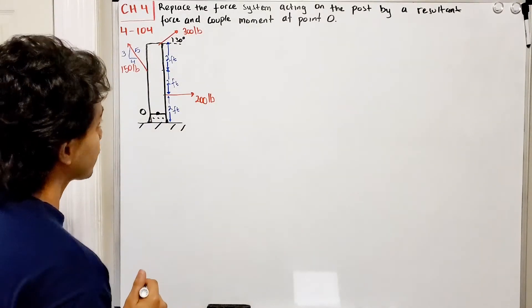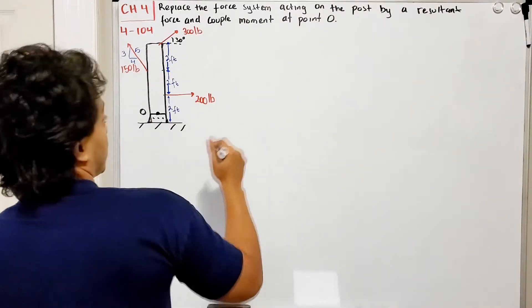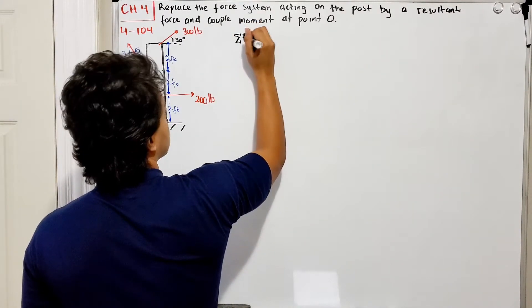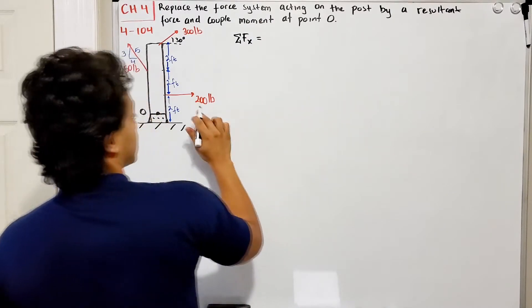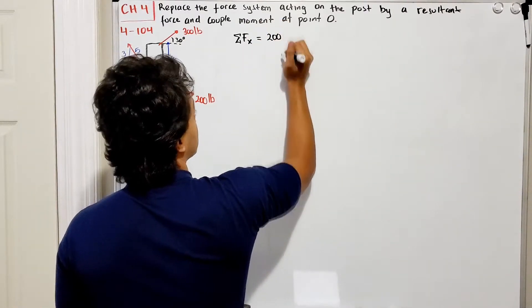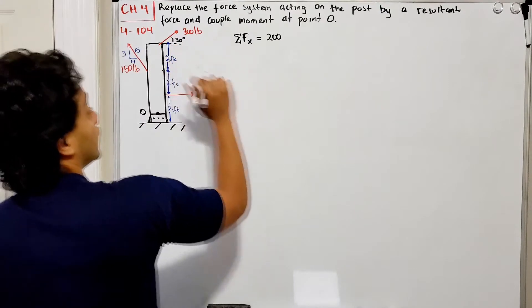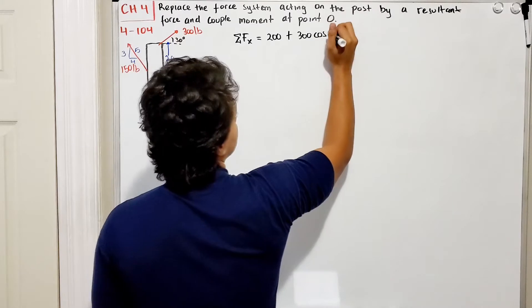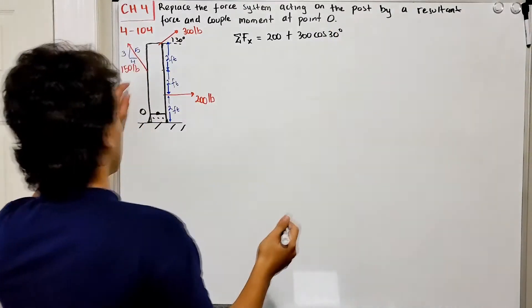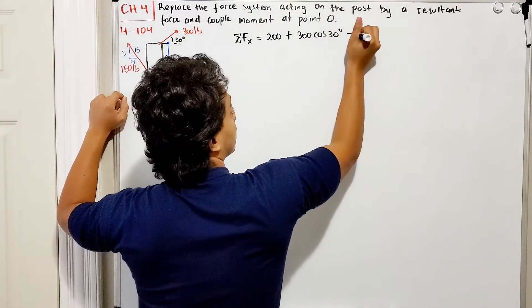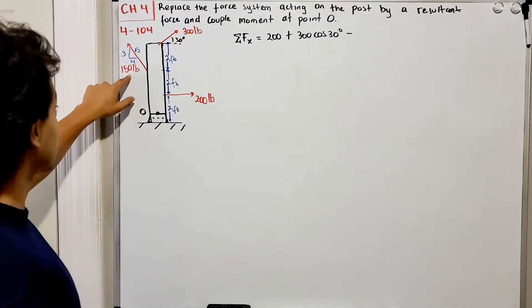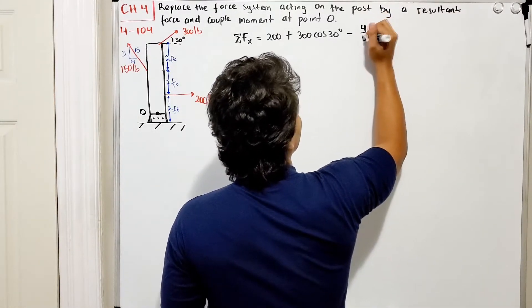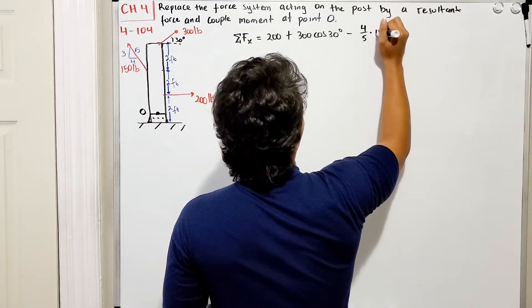To find the resultant force, we need to add all the forces in the x direction. We got positive 200 pounds, plus 300 multiplied by cosine of 30 degrees, and then we have negative 150 pounds, but how much of it? Four out of five, so four-fifths of 150 pounds.